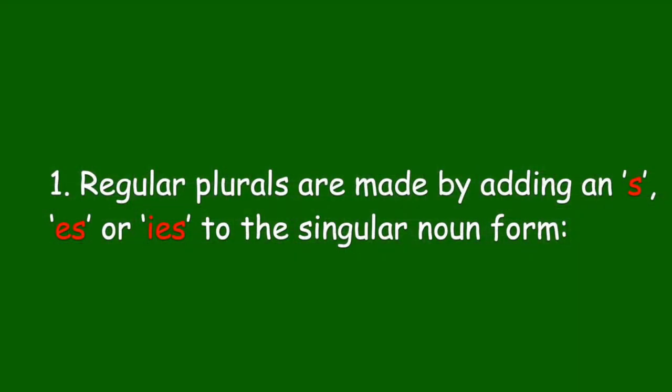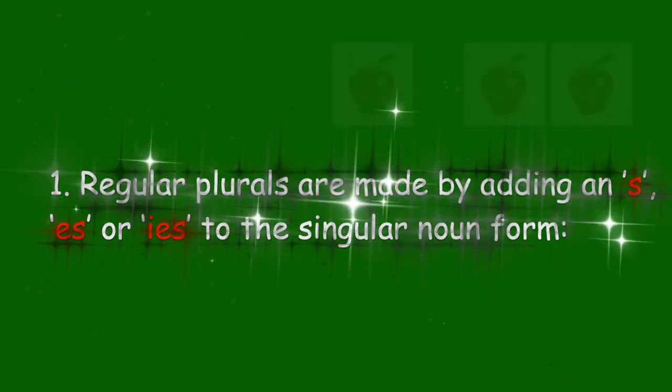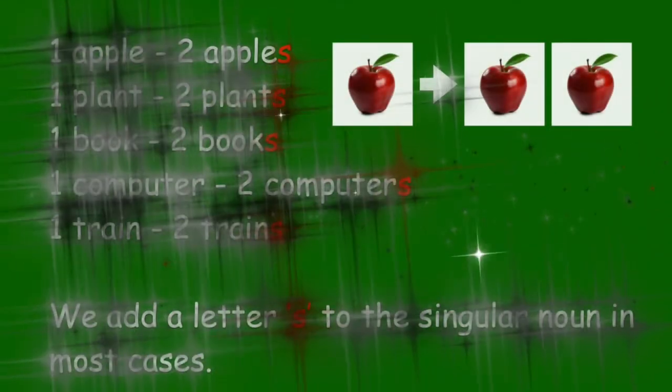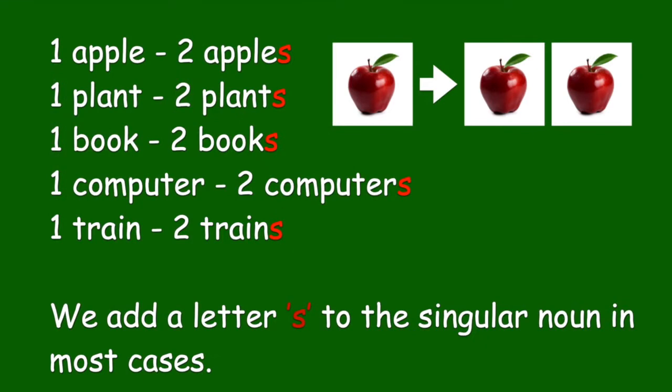Regular plurals are made by adding an S, ES, or IES to the singular noun form. For example: one apple, two apples; one plant, two plants; one book, two books; one computer, two computers; one train, two trains. We add a letter S to the singular noun in most cases.